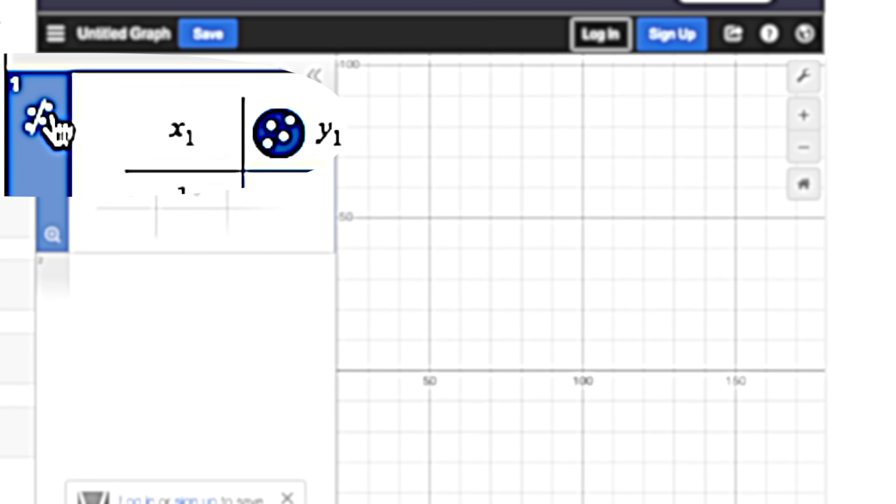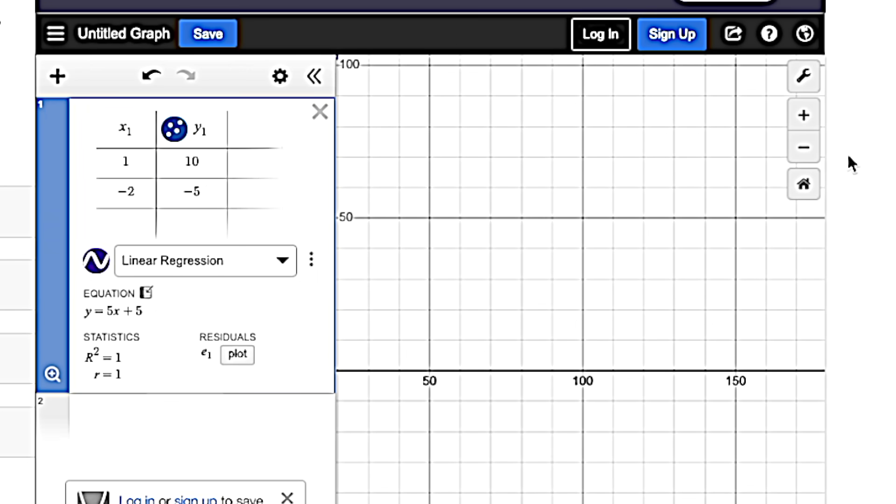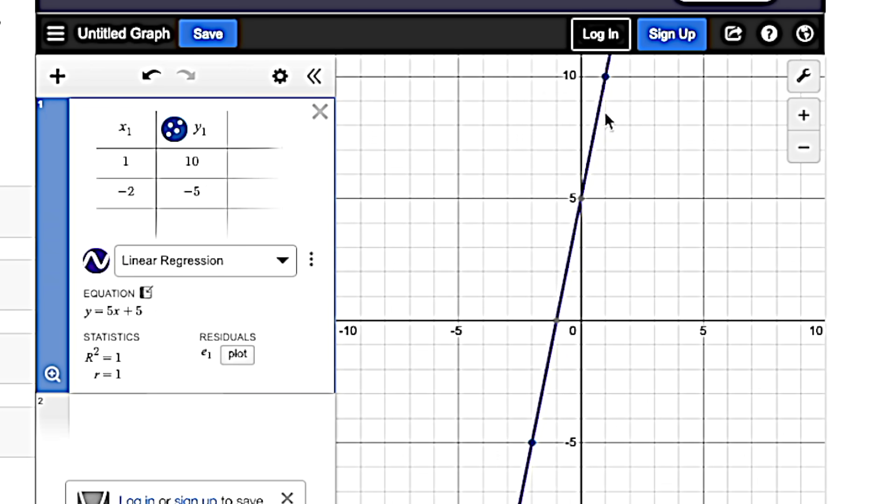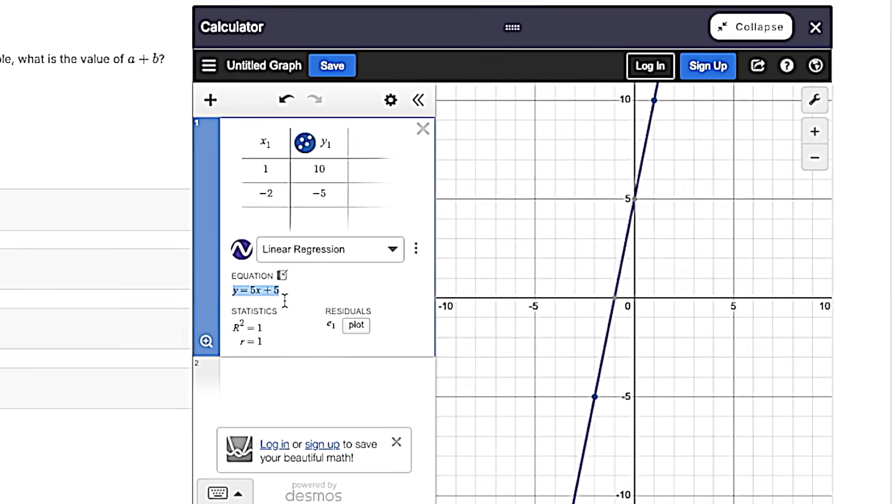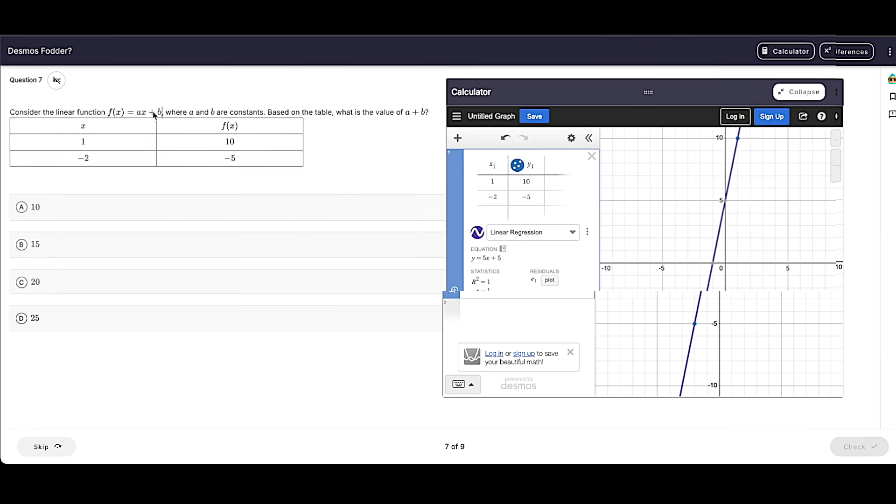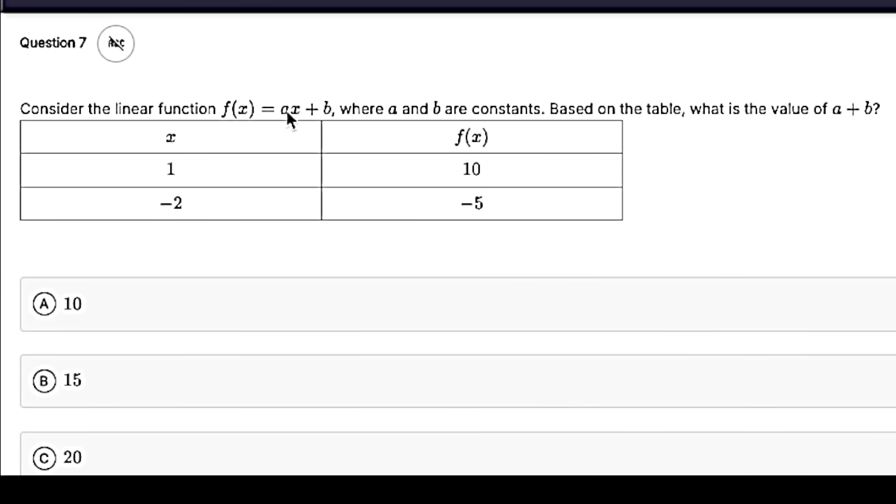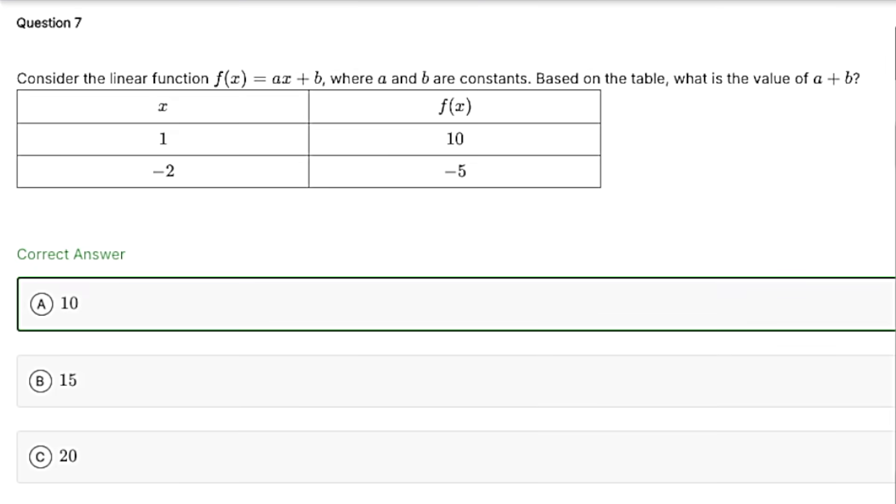And you could add a linear regression, which not only graphs the line of the table for you, but also gives you the equation. So we know this is y equals 5x plus 5. We match that up with ax plus b. Then a equals 5 and b equals 5. So then a plus b is going to be 10.